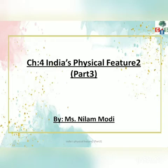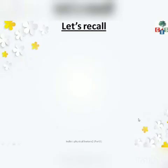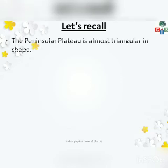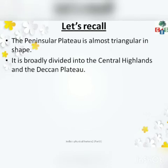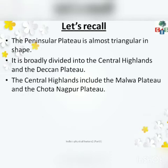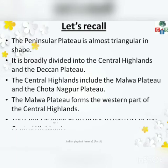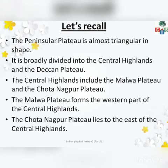We are starting with the third video of India's Physical Features Part 2. We have completed two videos of this chapter. Let's recall what we studied in the last video. The Peninsular Plateau is triangular in shape. It is divided into two parts: the Central Highland and the Deccan Plateau. Central Highland includes Malwa Plateau and Chotanagpur Plateau. Malwa Plateau is in the western part and Chotanagpur Plateau is in the eastern part of the Central Highland.